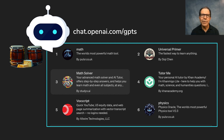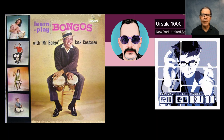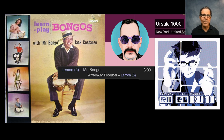It turns out that Mr. Bongo is Jack Costanzo, who released this LP in 1961, where he demonstrates his Bongo secrets for us, one by one. And his listeners are invited to follow along and then do the same. And about 40 years later, Ursula 1000 teamed up with Lemon to create a very clever music track called Mr. Bongo, using samples from that.